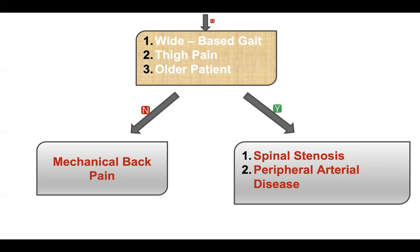Red flag symptoms indicating possible serious spinal pathology include: onset at age less than 20 or more than 50, thoracic pain, previous history of carcinoma, steroids, or HIV infection, night sweats, weight loss, widespread neurological symptoms — especially sphincter disturbance — structural spinal deformity, and non-mechanical pain, especially if constant and worsening at night. Only after excluding all of these can we assume mechanical low back pain.